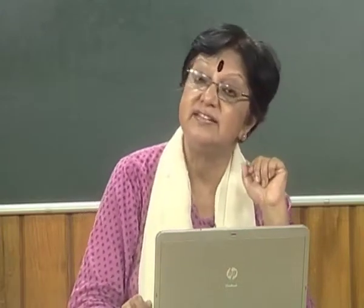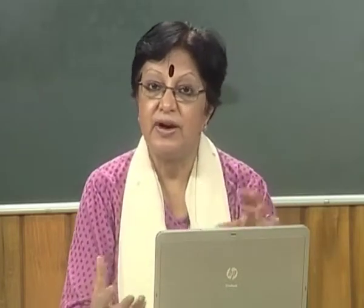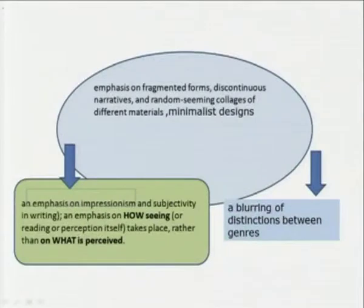The central preoccupation of modernism is with the inner self and consciousness. The mind of man — with all its mysteries, fluctuations, and lateral thinking — was the subject of discourse. Not only the subject of discourse, but also the technique of how the mind operated was being transferred into the creative process. Experiments in literary form therefore found emphasis on fragmented forms, discontinuous narratives, random-seeming collages of different materials, and minimalist designs — all forming a different type of representation.